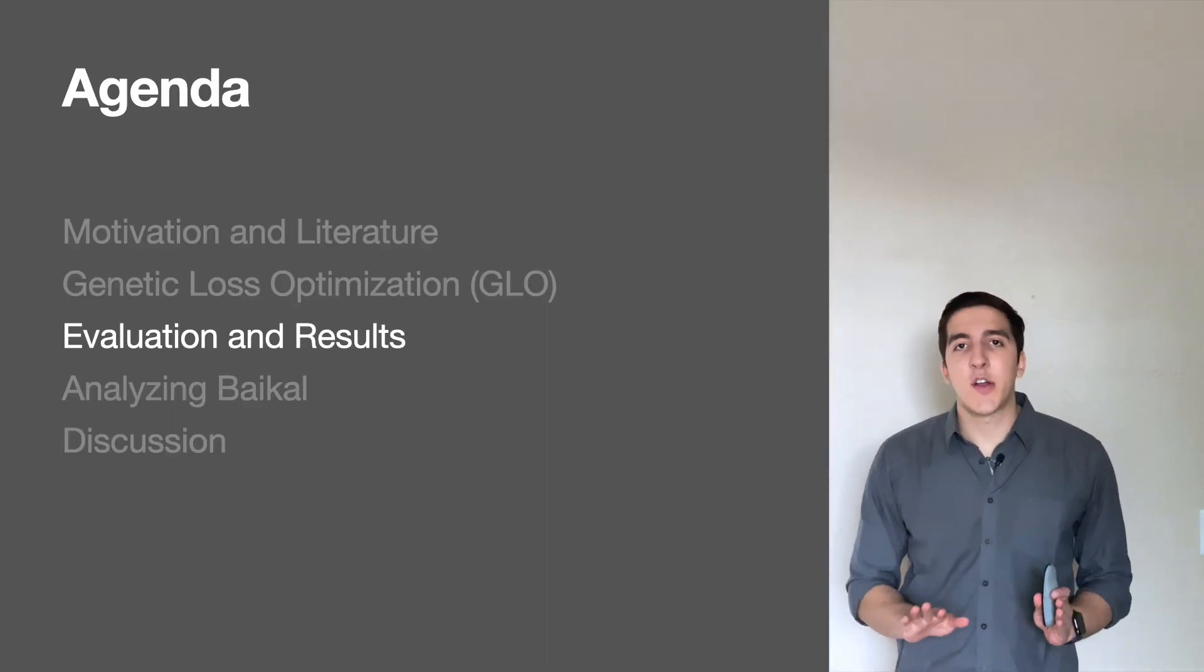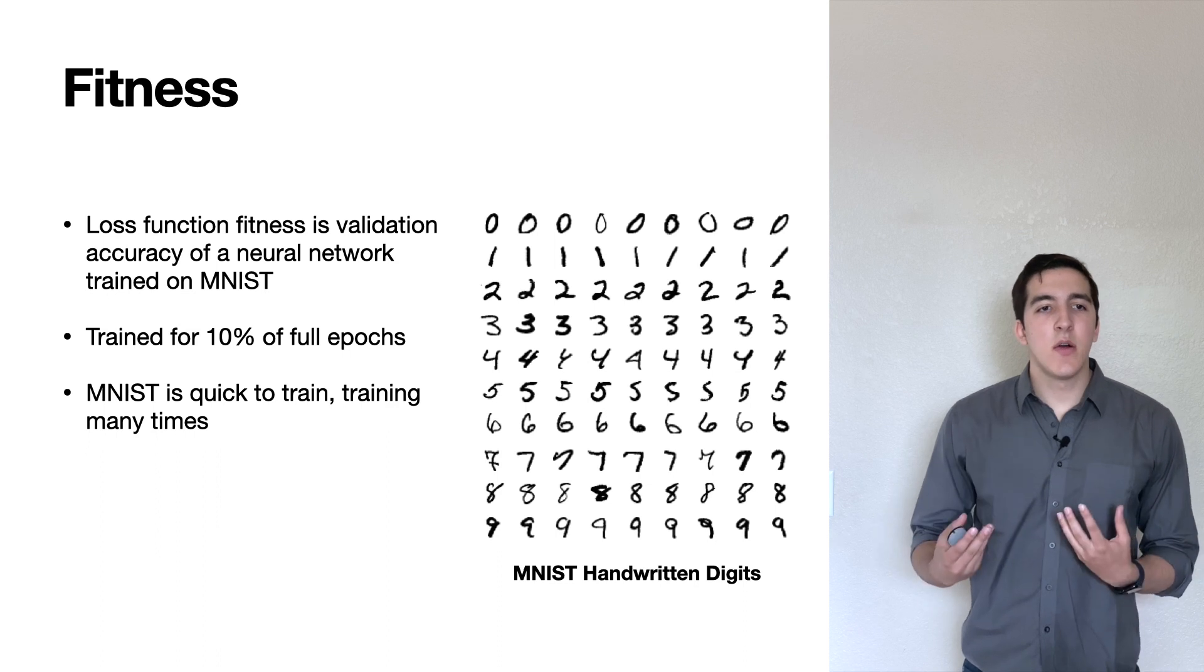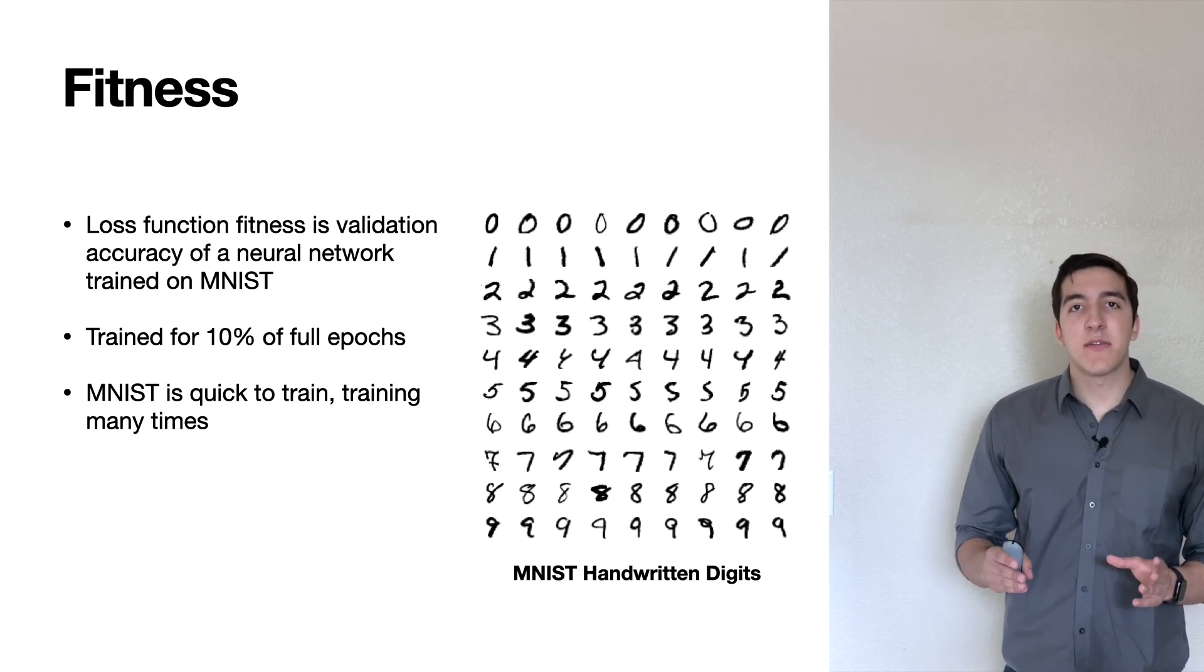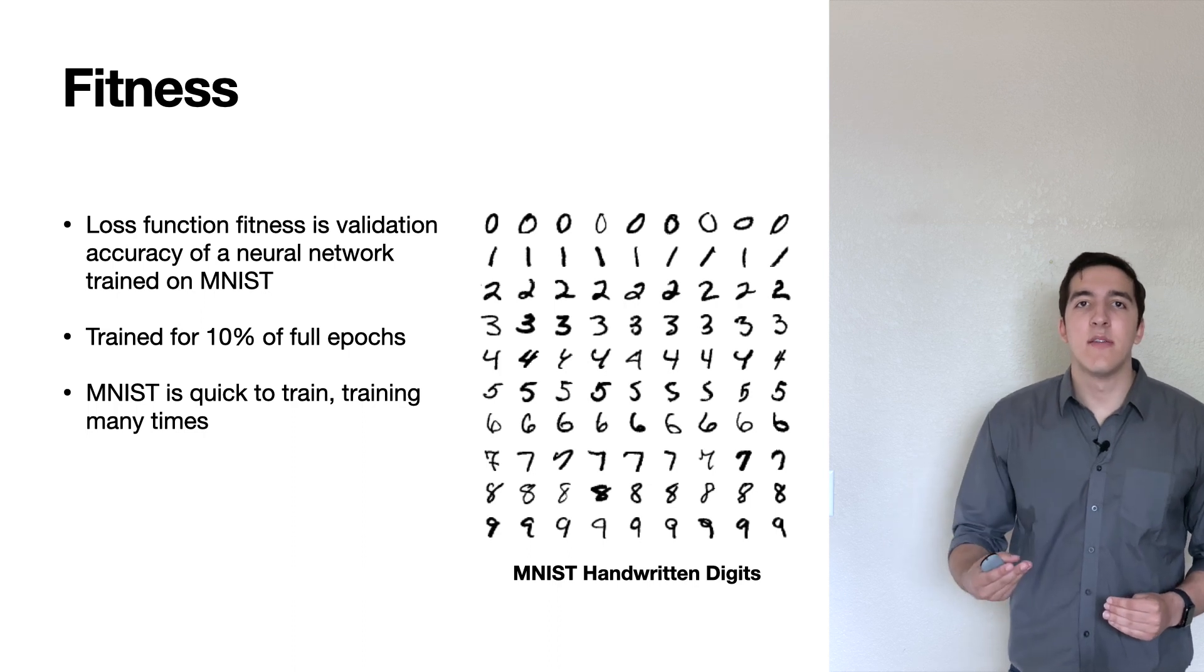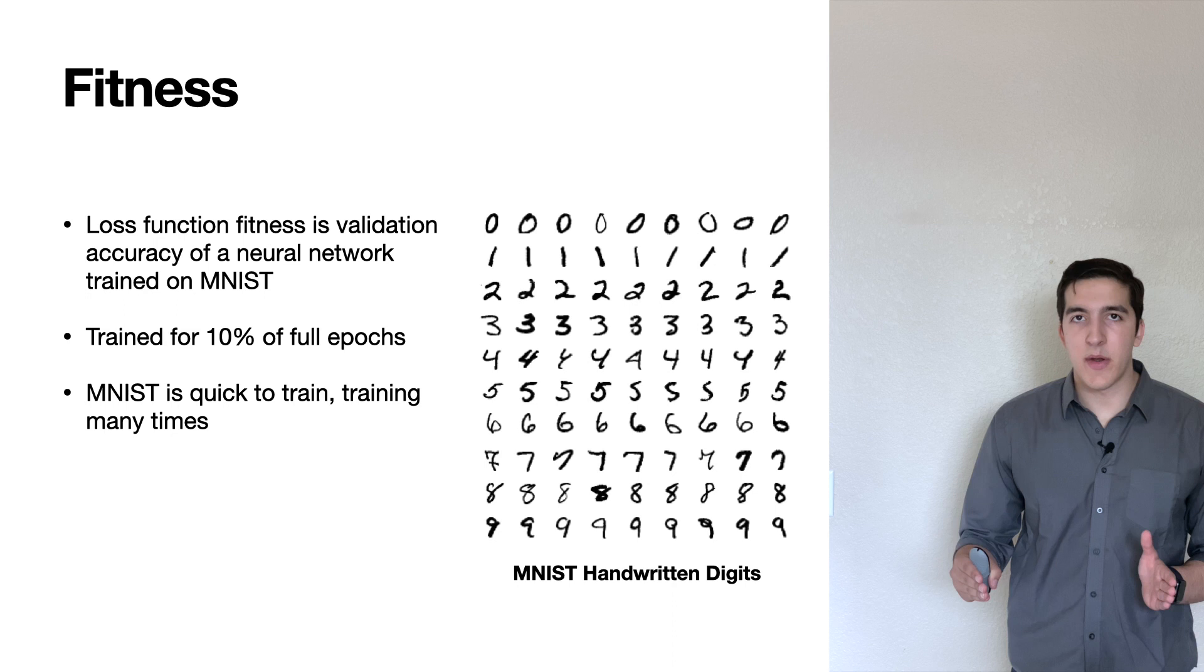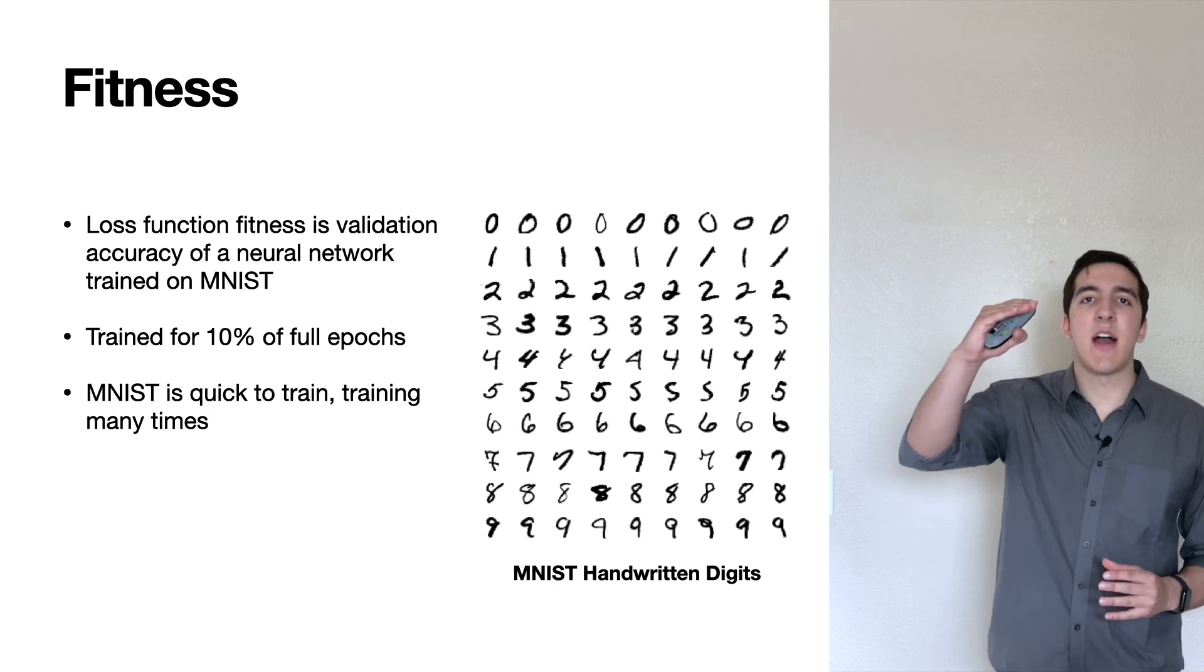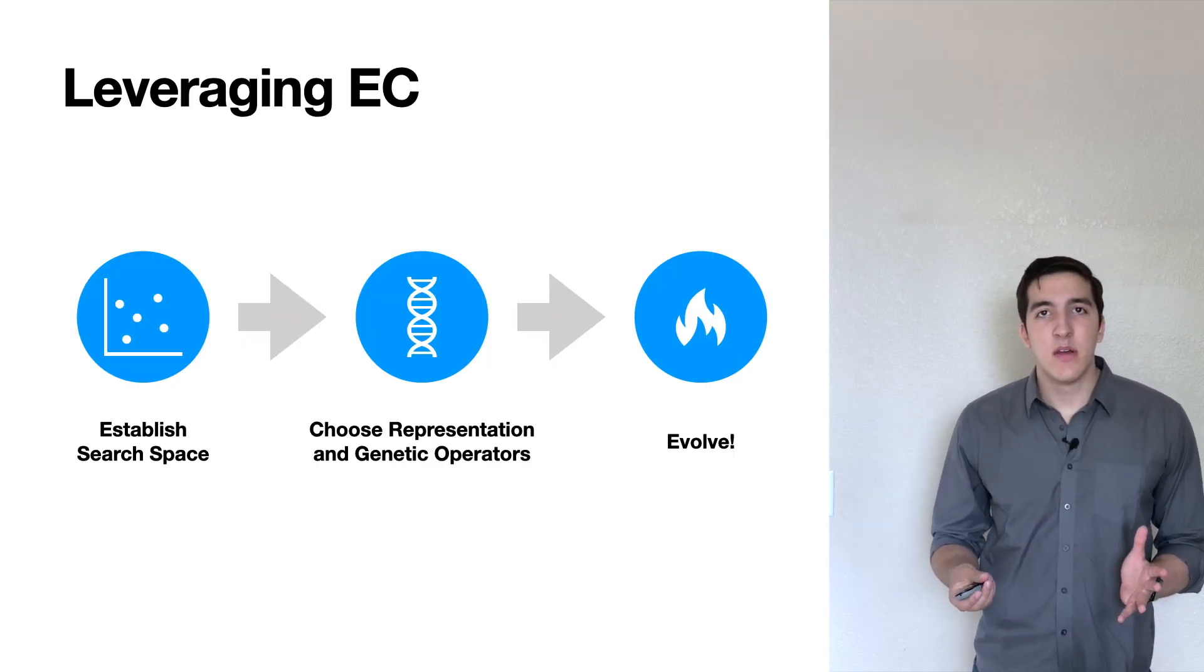So what do these results actually look like? Let's cover that now. But first, let's talk about how we're evaluating the system. There are numerous ways that a loss function could potentially be evaluated. In GLOW, we've chosen to determine loss function fitness through the validation accuracy of a neural network that has been trained with that specific loss function. We've chosen the MNIST handwritten digits classification task as a benchmark to use. This is a common benchmark in the literature and is a small enough data set that we can really quickly iterate and evaluate different experiments. So additionally, we're calculating fitness with just 10% of the number of epochs used in a full training run. While this may seem to give noisier estimates because it's early on in the training of a neural network, we find that it's actually pretty gratuitous because it encourages the development of loss functions that are able to reach a high level of accuracy early on in the training process.